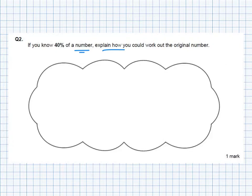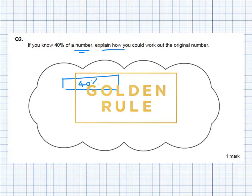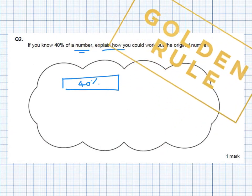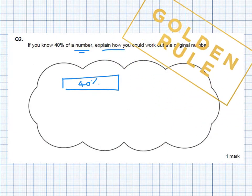If you know 40% of a number then explain how you could work out the original number. Well I would start by drawing my 40%. So here's my 40%. Now I always, golden rule, have to try and find 10% first is my golden rule.